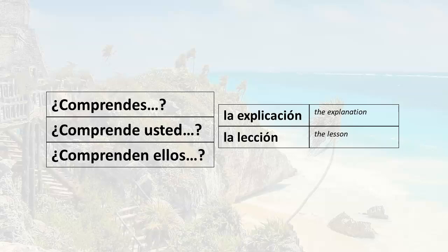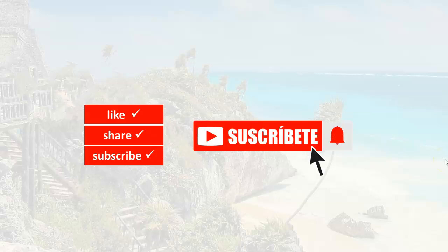It's that simple. Remember, to ask a yes or no question just reverse the subject and conjugated verb word order — verb first, then subject, then any other part of the question. That's it for this lesson. Thanks very much for watching. If you found this helpful, I'd really appreciate it if you'd give it a like.